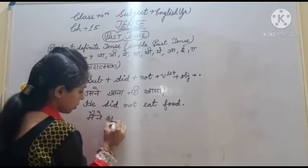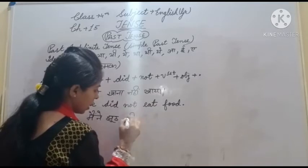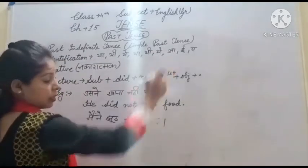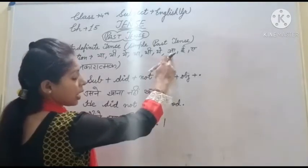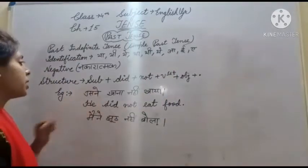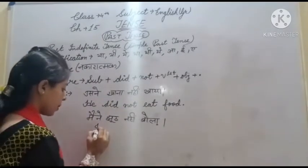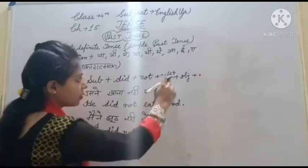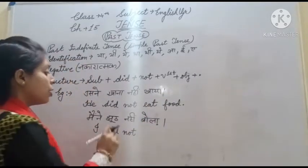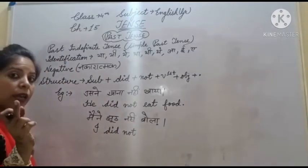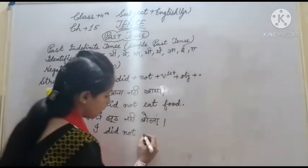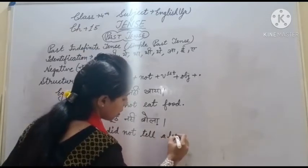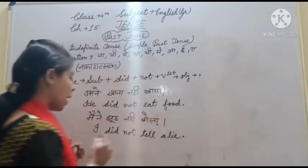Next example: मैंने झूठ नहीं बोला। बड़ा आ गया — past tense, और नहीं आ रहा है तो negative। Subject 'मैंने' means I। I did not — उसके बाद झूठ बोलने की क्रिया 'tell a lie'। तो: I did not tell a lie। ठीक है? Full stop — I did not tell a lie।